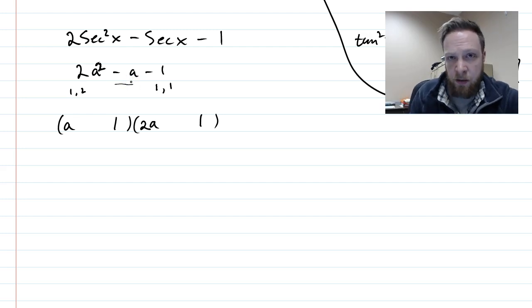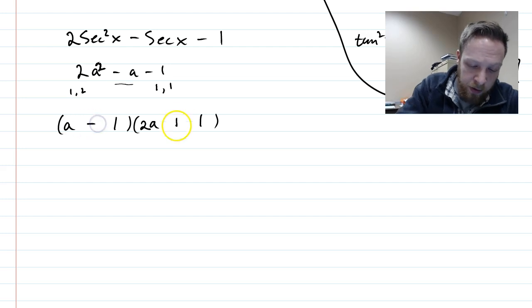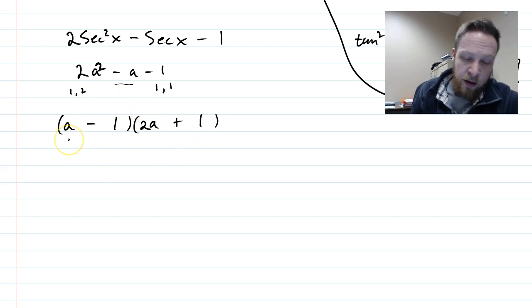And I'm trying to figure out what would I have to do so that my middle number, my minus a, turns into negative 1. And so I know that that means that I have to have minus plus. So if I foil out, I'm going to get a minus 2a and a positive a, which would add up to be that middle term.